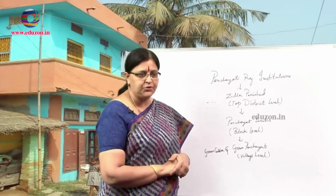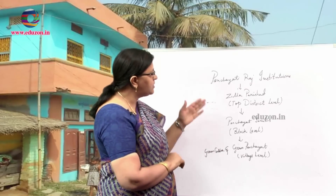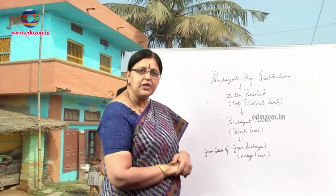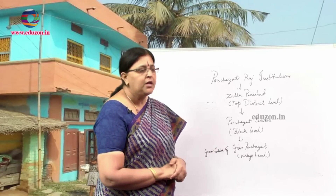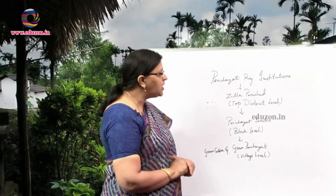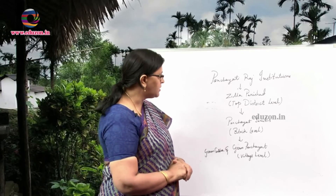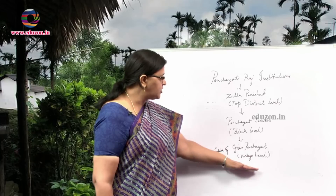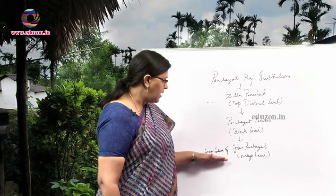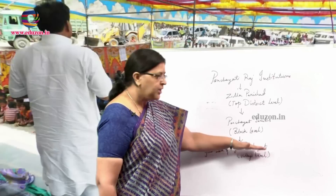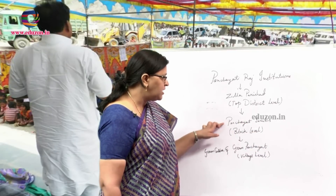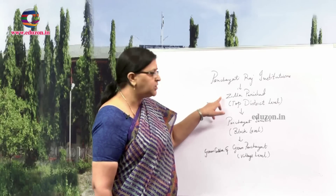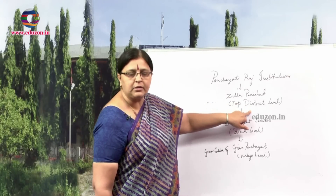These Panchayati Raj institutions are a system of local self-government practiced very well and working efficiently at all levels. The Panchayati Raj system is a three-tier system. The first level is at the village level, consisting of two sets: Gram Sabha and Gram Panchayat. The second level is Panchayat Samitis at the block level. The third tier is Zilla Parishad at the top district level.